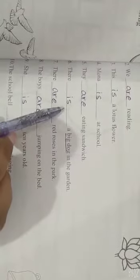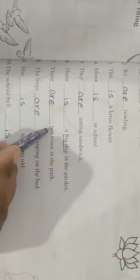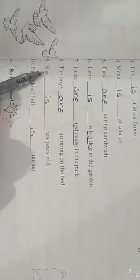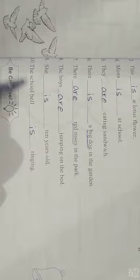Single hai, is liye is lagaya hai. Lekin next sentence mein red roses jata hai, to are use hoga. The boys, boys jata hai, are jumping. She is, the school bell is ringing. Okay.